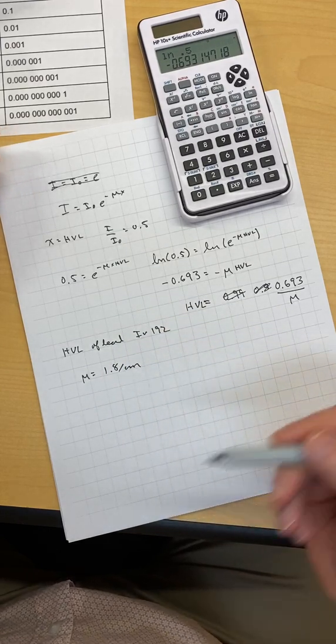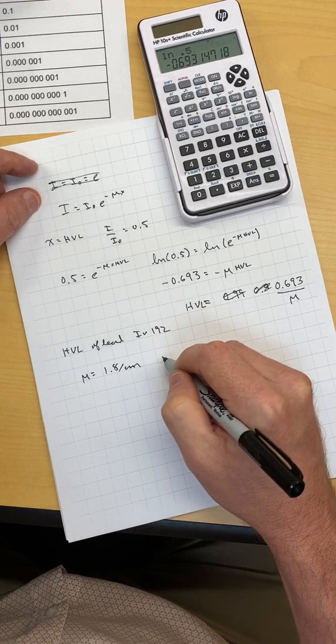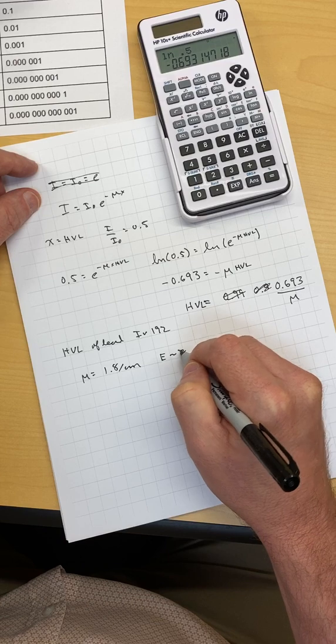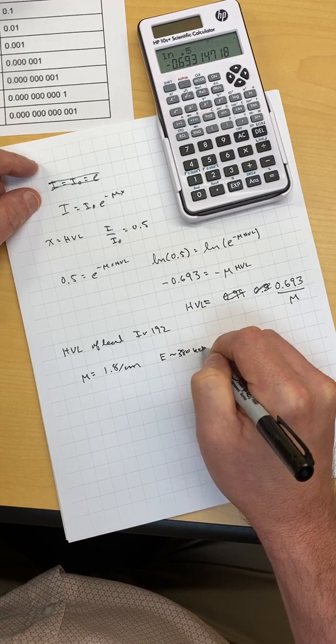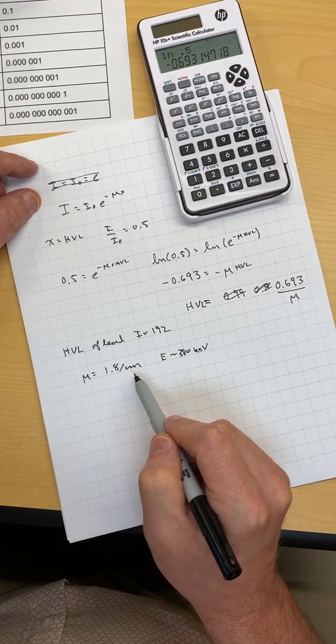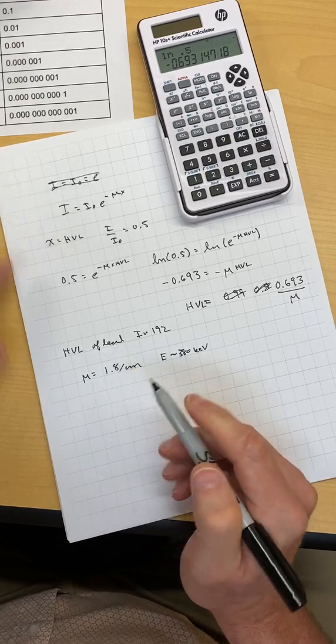For the particular energy I picked out, I picked out one that was about 380 keV. So the attenuation of a 380 keV x-ray is right around 1.8 per centimeter for lead.